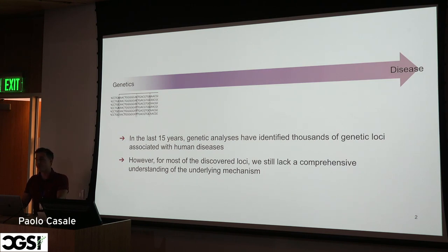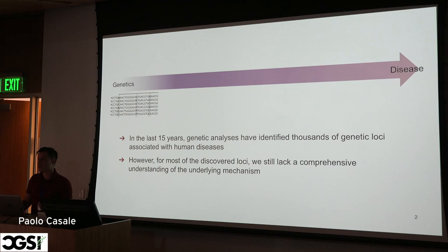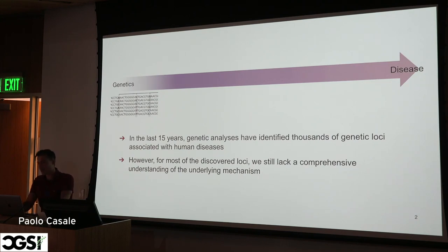As you all know, in the last 20 years genome-wide association studies have been really successful. We identified thousands of variants associated with complex traits and human disease. However, for most of the loci that we identified through GWAS, we don't know what they do — we don't know the cell type, we don't know the tissue, we don't know the biological process that gets affected, ultimately leading to the manifestation of disease.